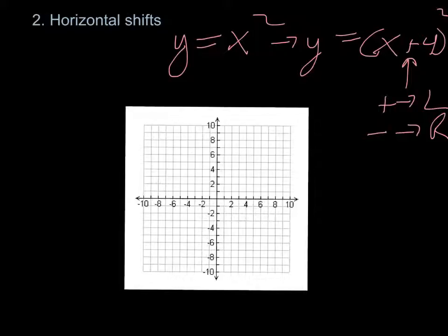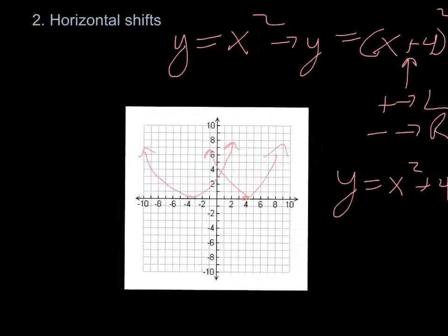So with x plus 4 squared, it shifts 4 units to the left — the origin is now at negative 4. If it was x minus 4 squared, it would shift right. Remember, the shift has to be enclosed within the function of x. For example, y equals x squared plus 4 is a shift up, but y equals (x+4) squared is a horizontal shift to the left.